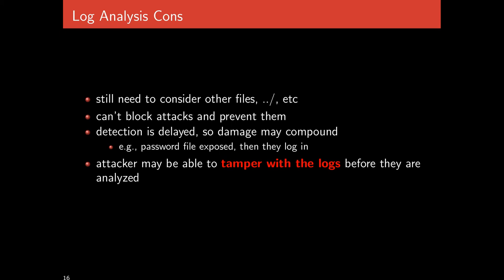On the con side, you still have to consider different files that might correspond to the same resource and different forms of dot-dot-slash. Logging cannot block attacks or prevent them — detection is delayed. It's not that the IDS stops the HTTP connection; instead, the next day you see a whole bunch of attacks that already occurred, which may already be too late. Furthermore, if the password file is exposed and they gain access to the system, they may tamper with the logs, stop logging, delete the attack traffic, and make it look like they were never there. The evidence production may not be reliably stored if they can tamper with it.